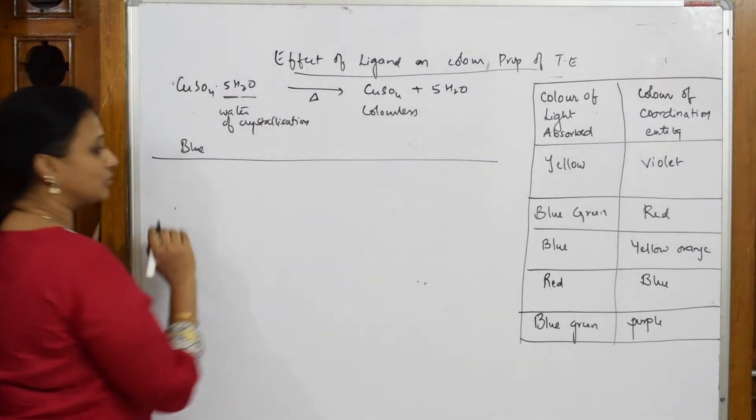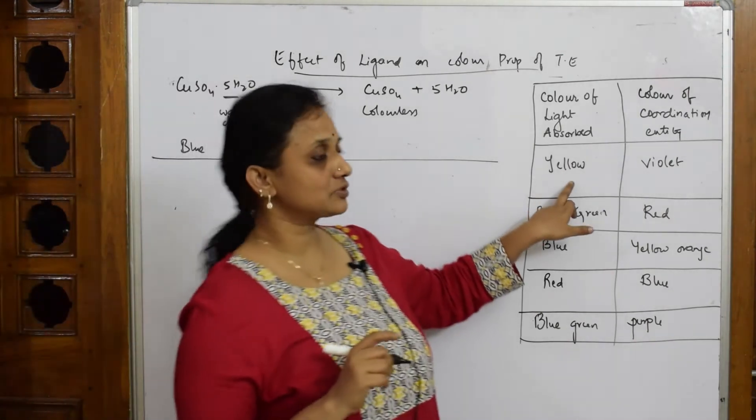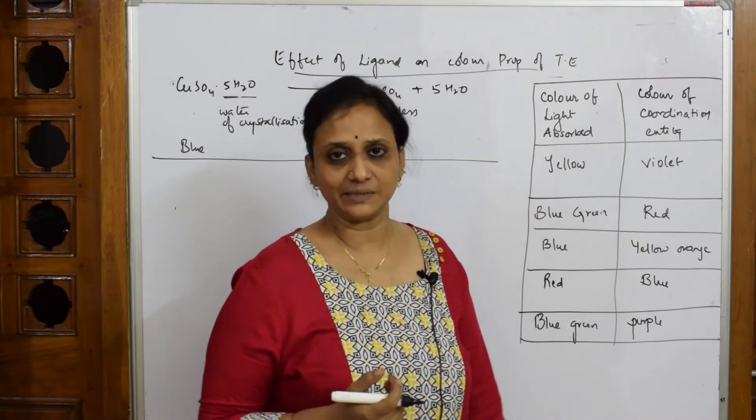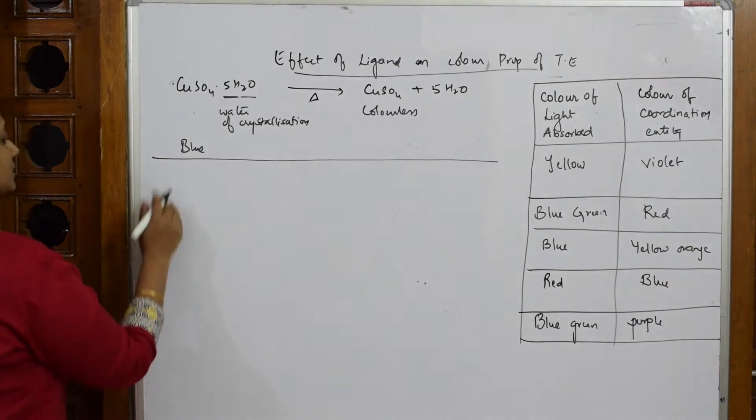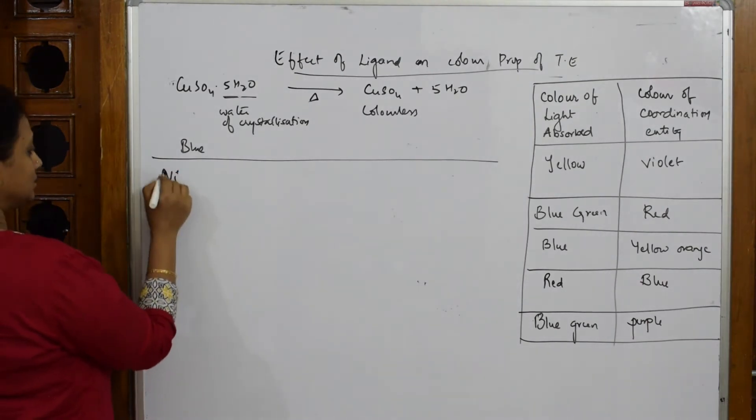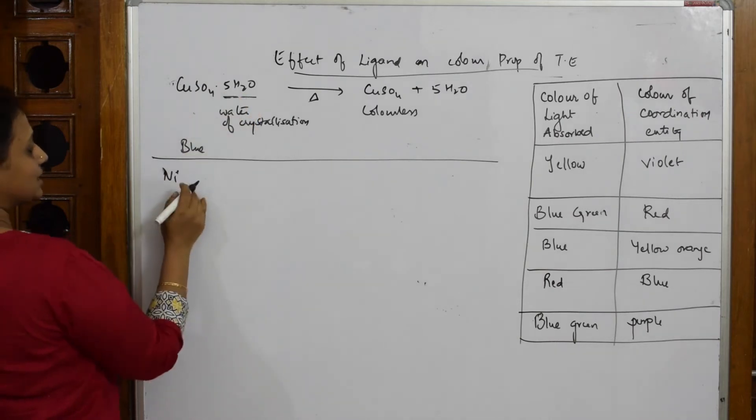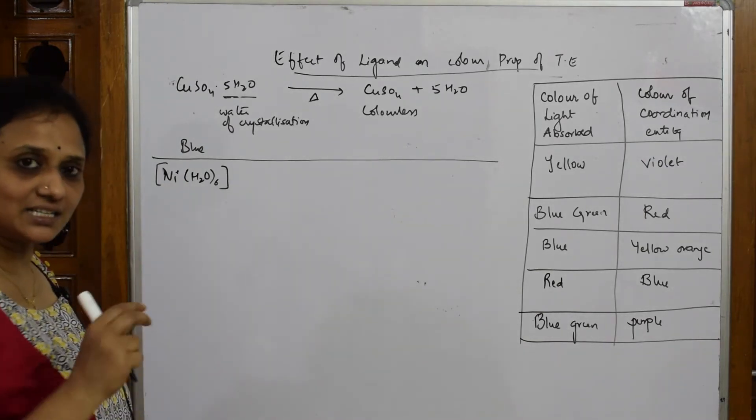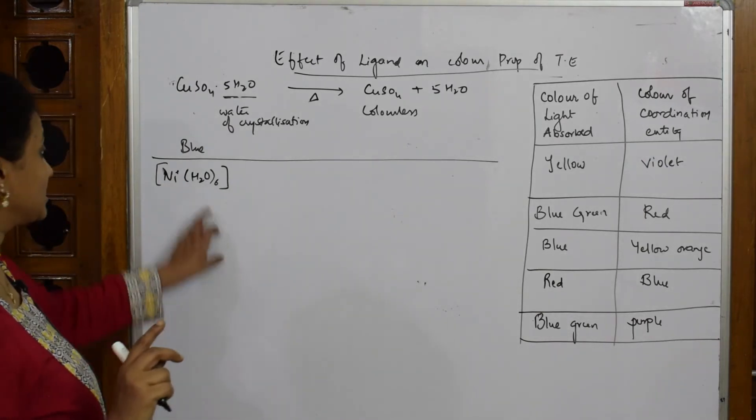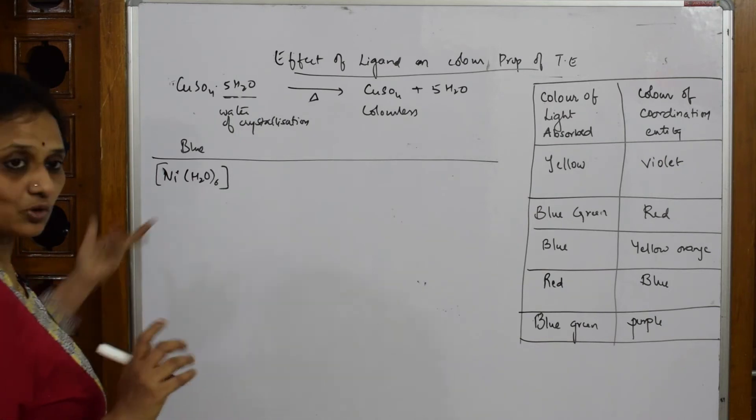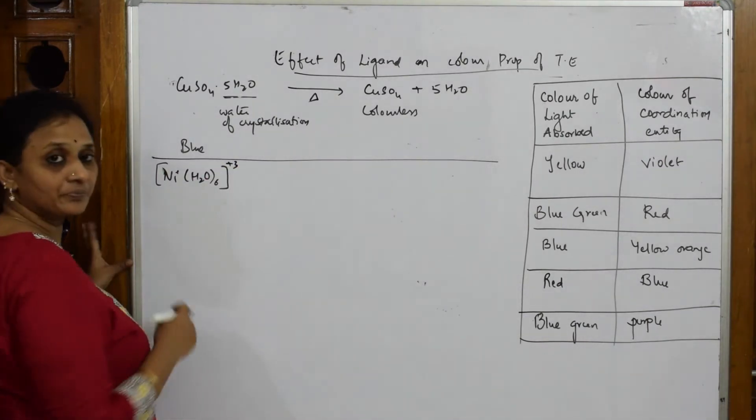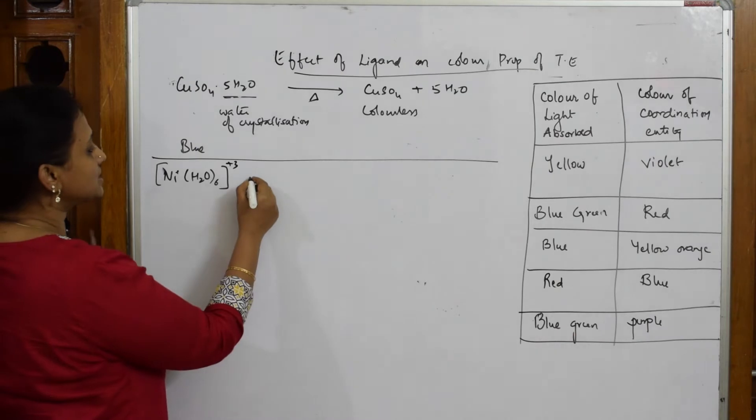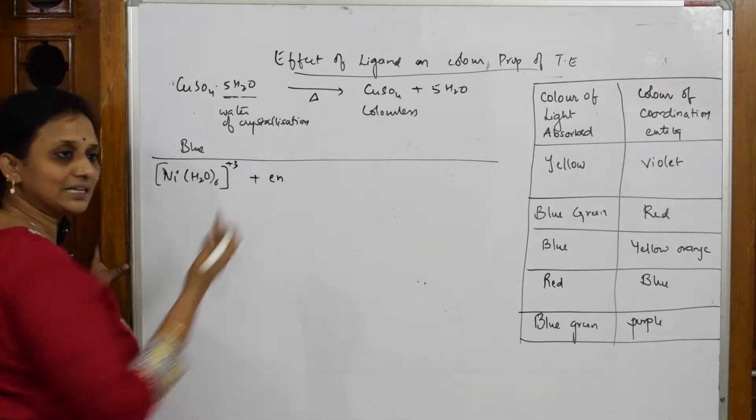With this concept, let us do one example. Remember, whichever color it absorbs, the complementary color is what you see. Now I am taking nickel with water hexacoordinate. So six ligands, coordination number six - Ni(H2O)6 plus three charge. To this, I am going to add ethylenediamine, a chelating ligand.